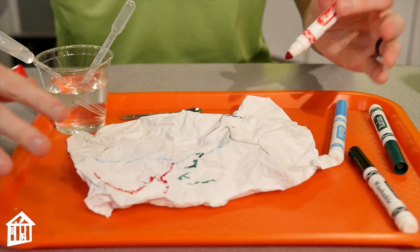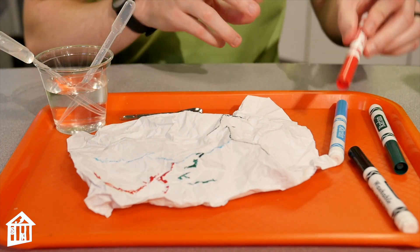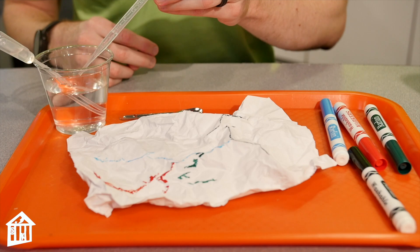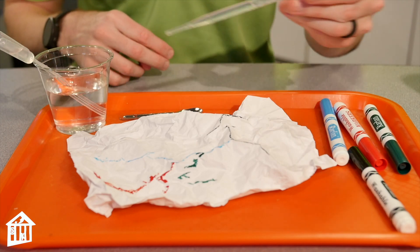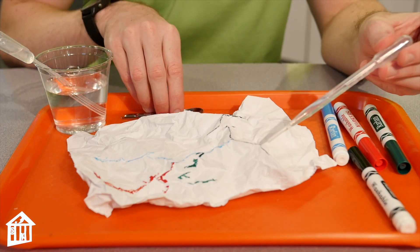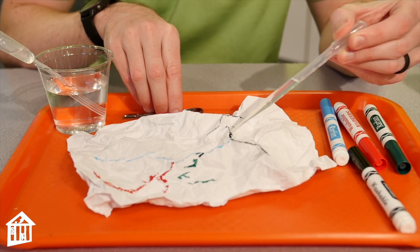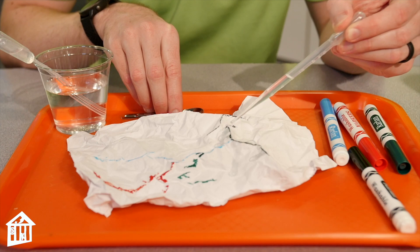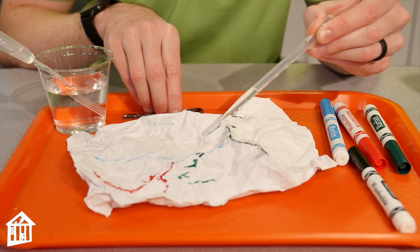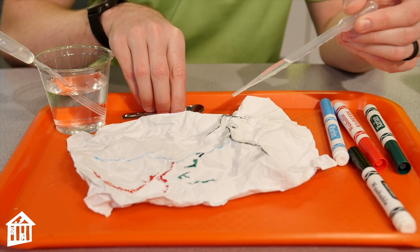So once you have colored all the ridges that you want to, you're then going to take your water. If you have a pipette, you'll start dripping little droplets along the top of your paper or where you colored.